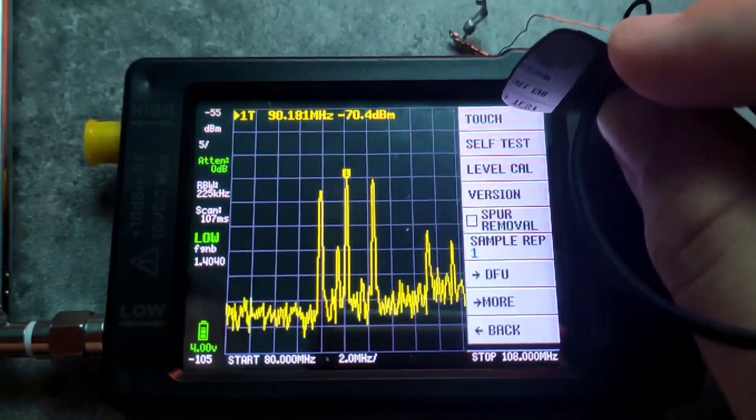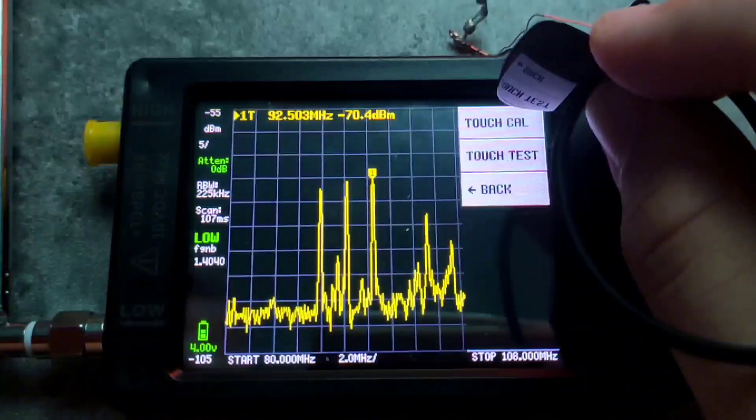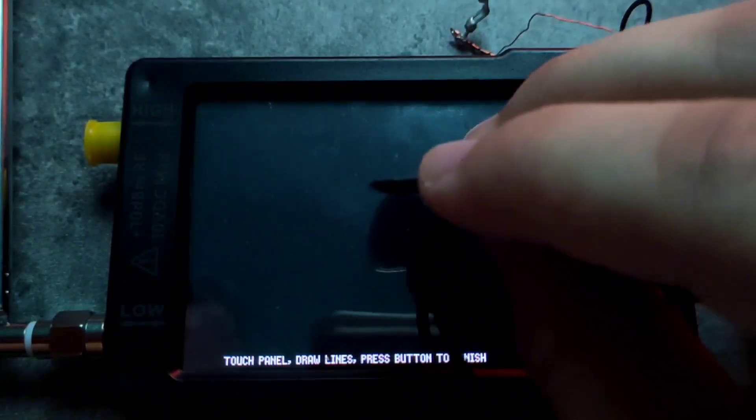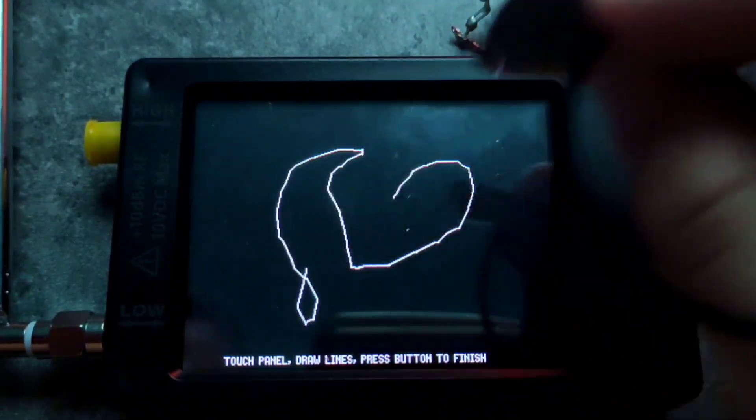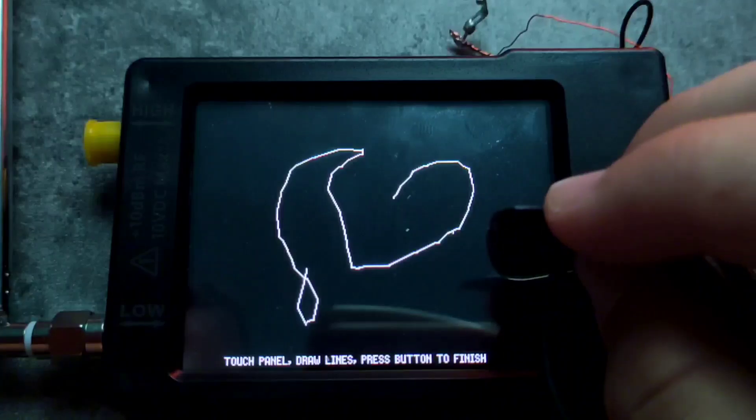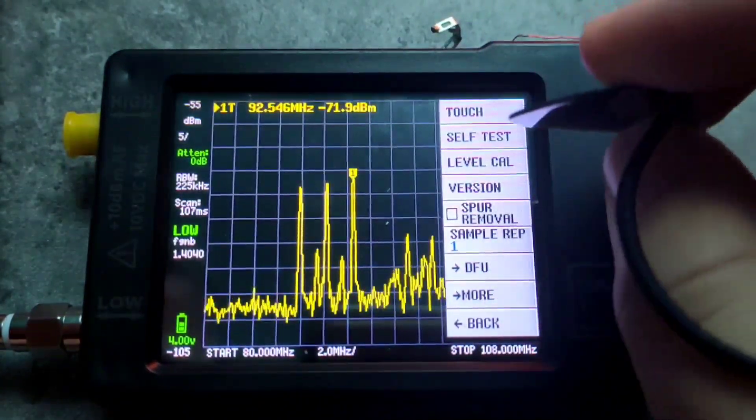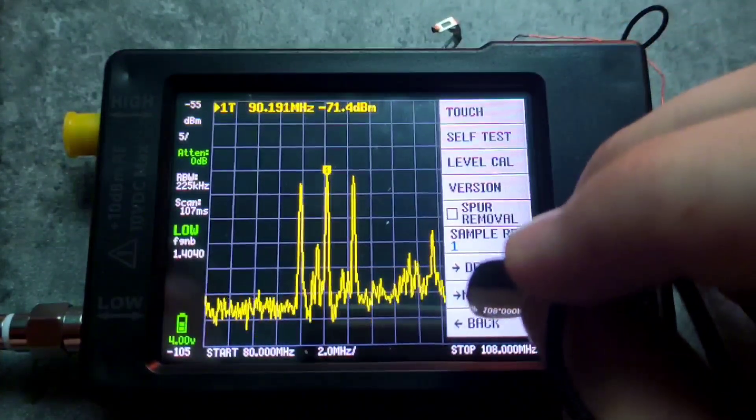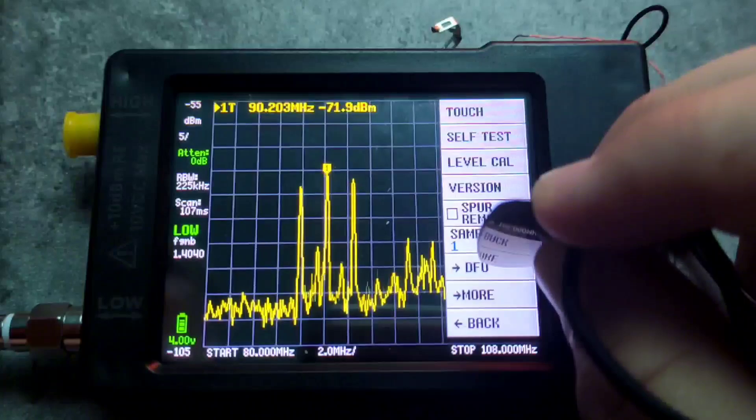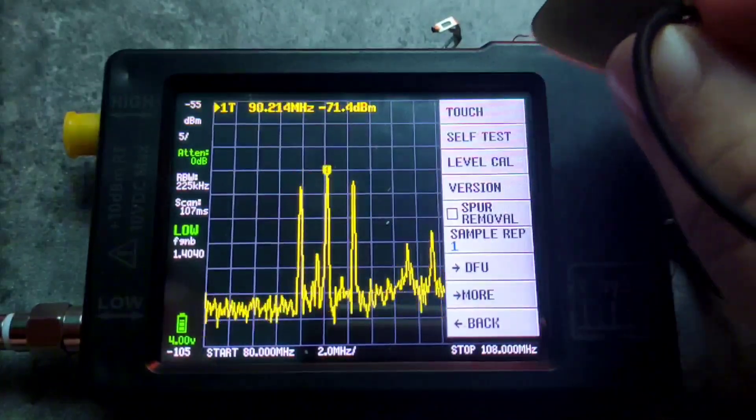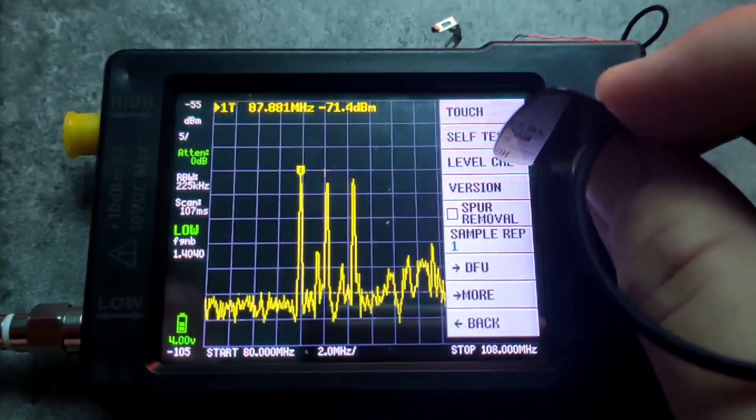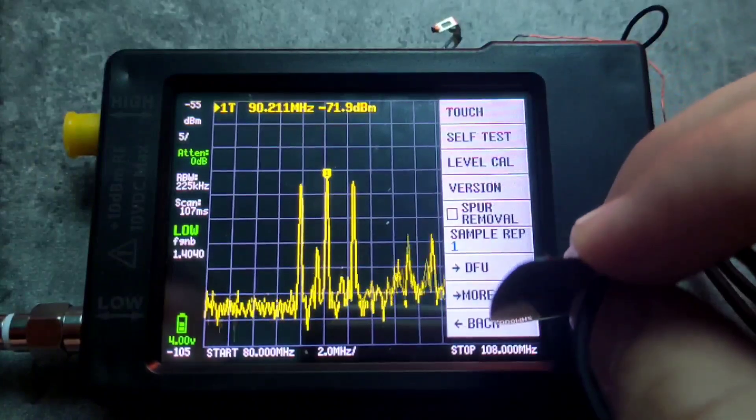We have configuration, which is also pretty important. Here we can for example do a touch test to calibrate it, basically the touch calibration. And here you can set it in such that you can also update the firmware. We can also do a self test and a level calibration which I am going to show you.